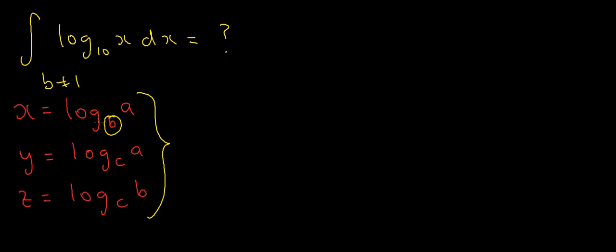So I'm going to raise both sides to some power — I'll exponentiate both sides with base b. If x equals log base b of a, then b to the power x equals b to the power of log base b of a. But b to the power of log base b of a is the same as a — the coefficient of the log in the exponent is 1, so that's just a.